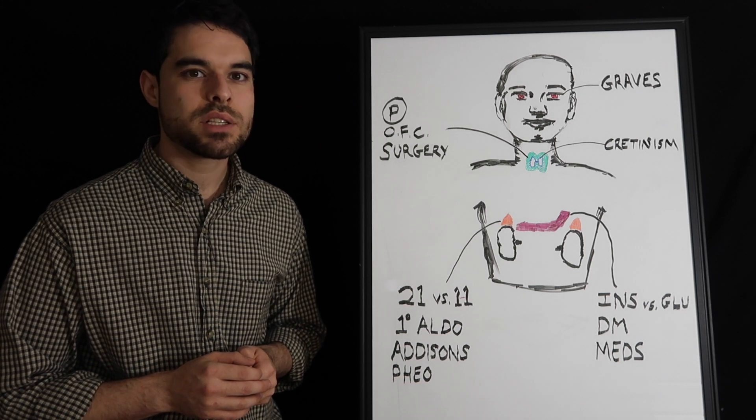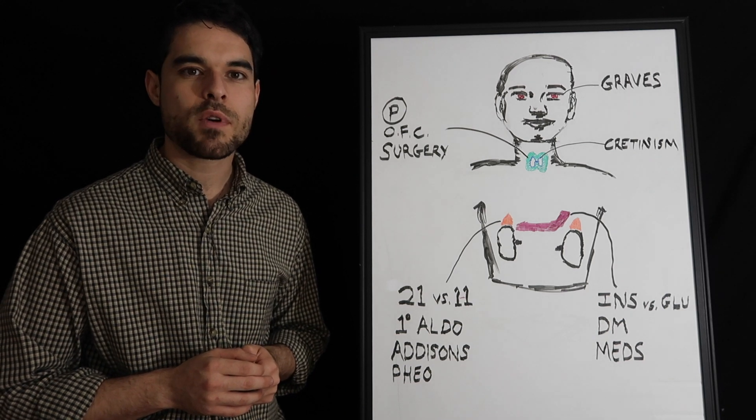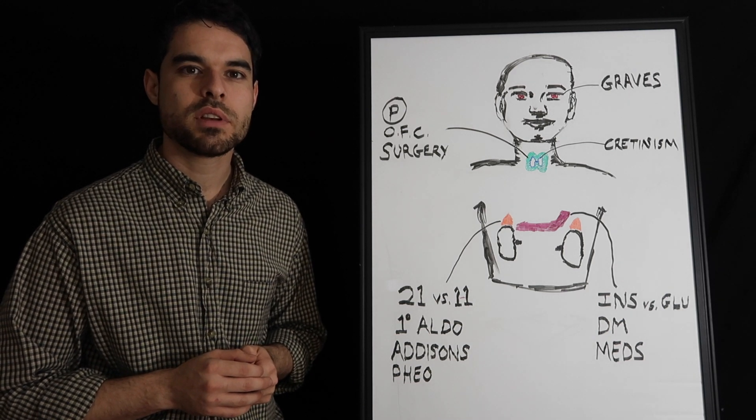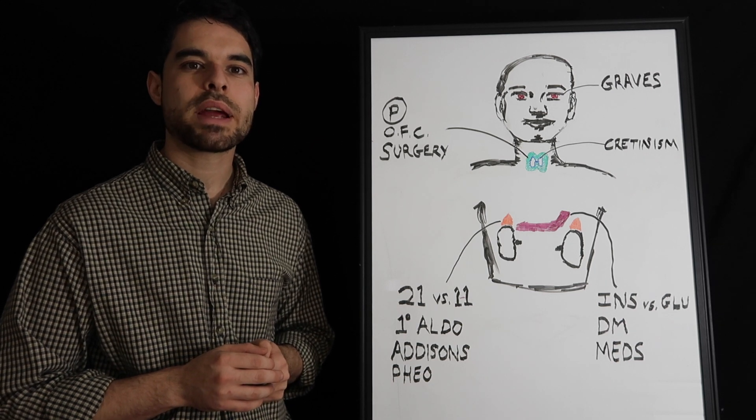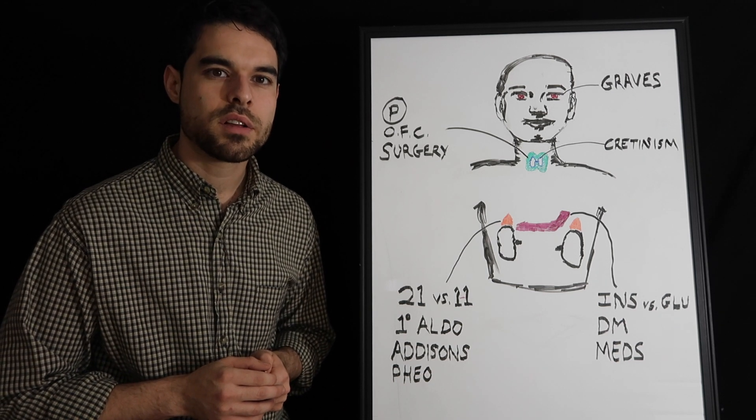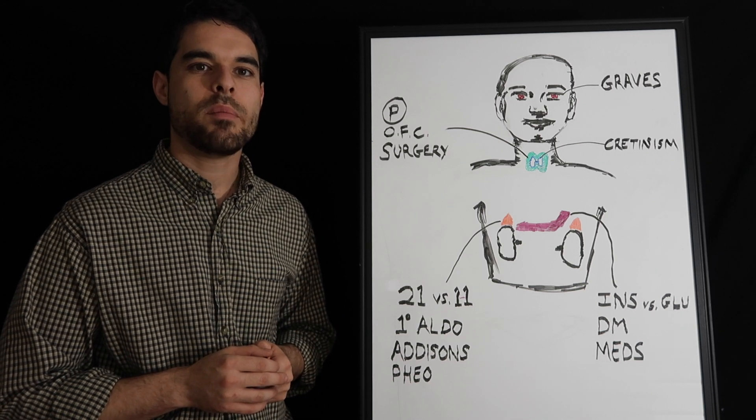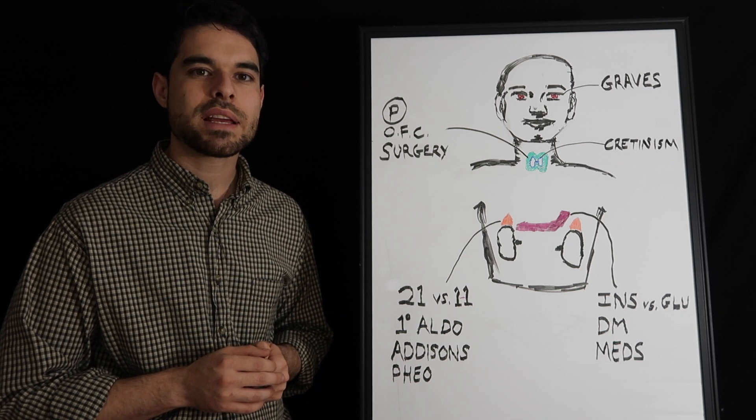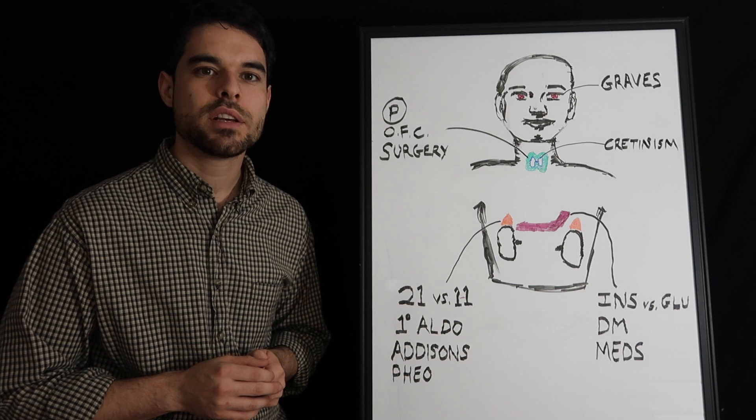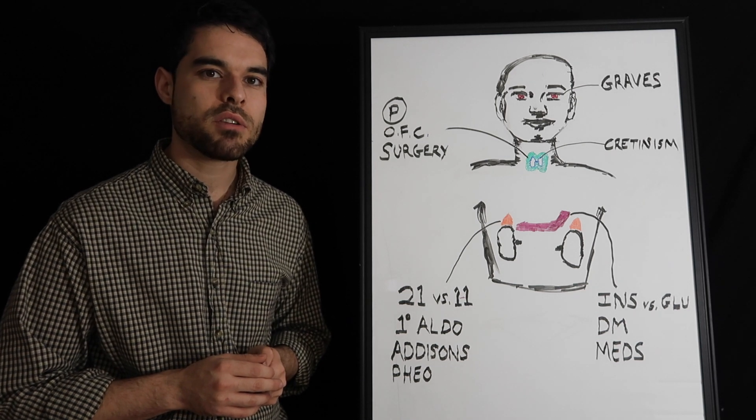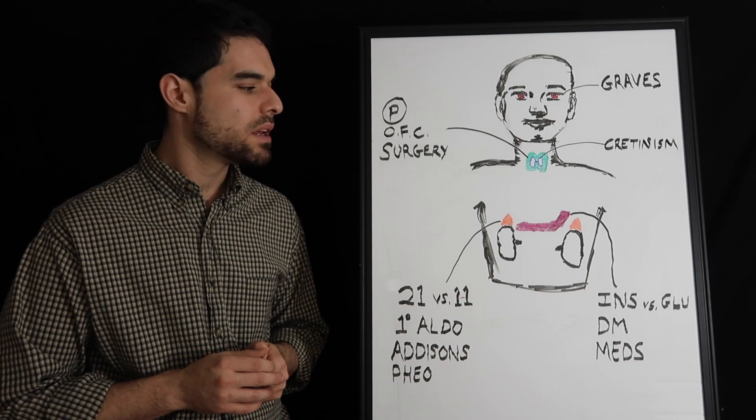There are three medications that are important for diabetes. Metformin, sulfonylureas, and the glitazones. Metformin, know that this one is used in pregnancy, has a very good profile. So it's used in pregnancy, it does not cause you to gain any weight. The problem with metformin though is that it can cause lactic acidosis. So you want to check if they have renal failure, check the creatinine, that's very important.